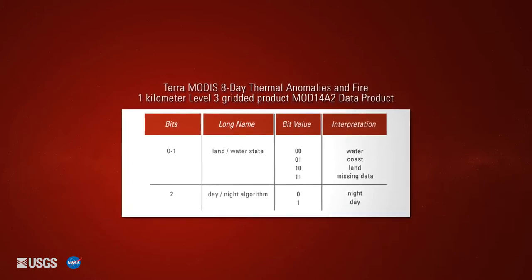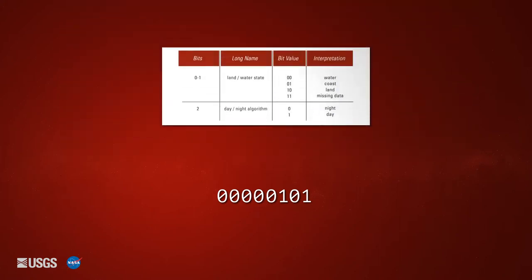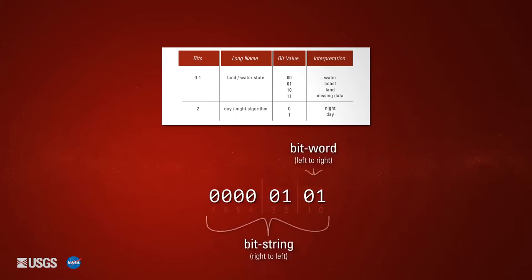Here is the integer value of one pixel from the 1km 8-day quality layer. This number will convert to an 8-bit binary value. This can be done using a calculator or conversion tool. Once the binary value is found, the value can be interpreted using the chart. The MODIS thermal anomalies and fire quality layer only uses 4 out of the 8 bits. The bit string is read from right to left.